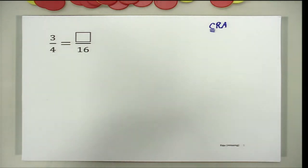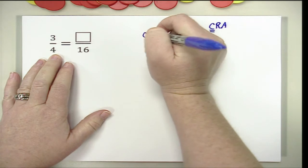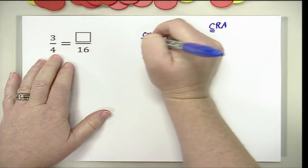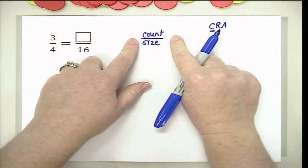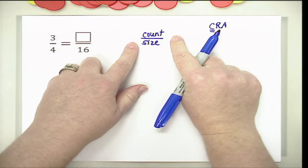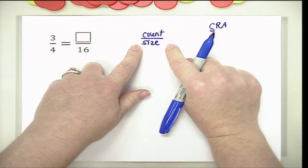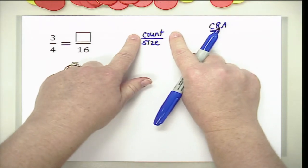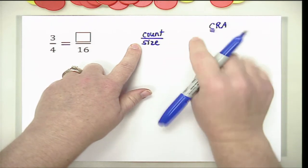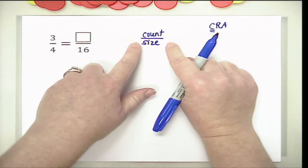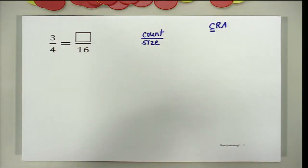In CRA, the numerator and the denominator represent the count and the size. Now these are not just new terms to get students confused with numerator and denominator. These terms are really a way for students to truly understand — conceptually understand — what the job of the numerator is and what the job of the denominator is. So for CRA we are going to use the terms count and size.